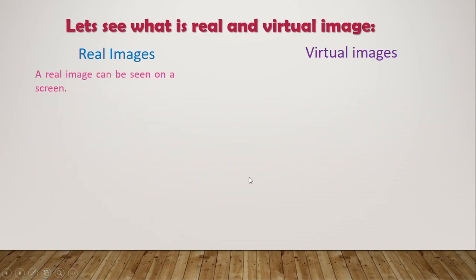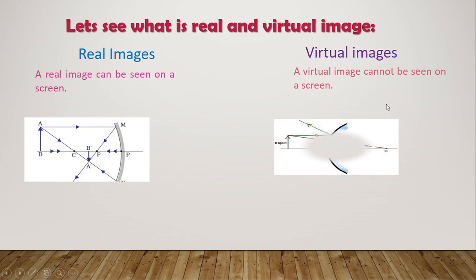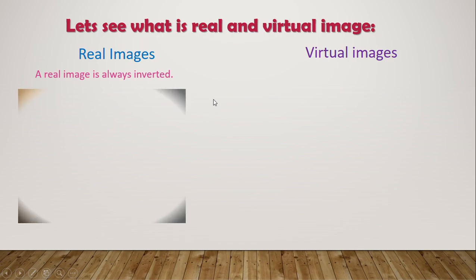A real image can always be seen on a screen — it can be traced on a screen. A virtual image, however, cannot be taken on a screen; it can never be projected on a screen. We will see a video demonstrating that the real image can be taken on a screen whereas the virtual image cannot. Also, the real image is always inverted.